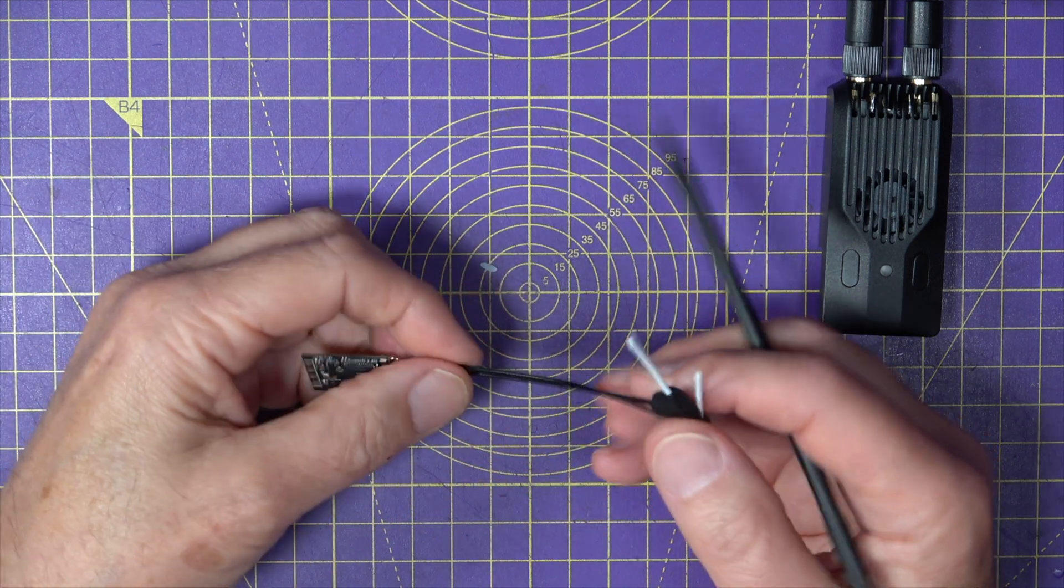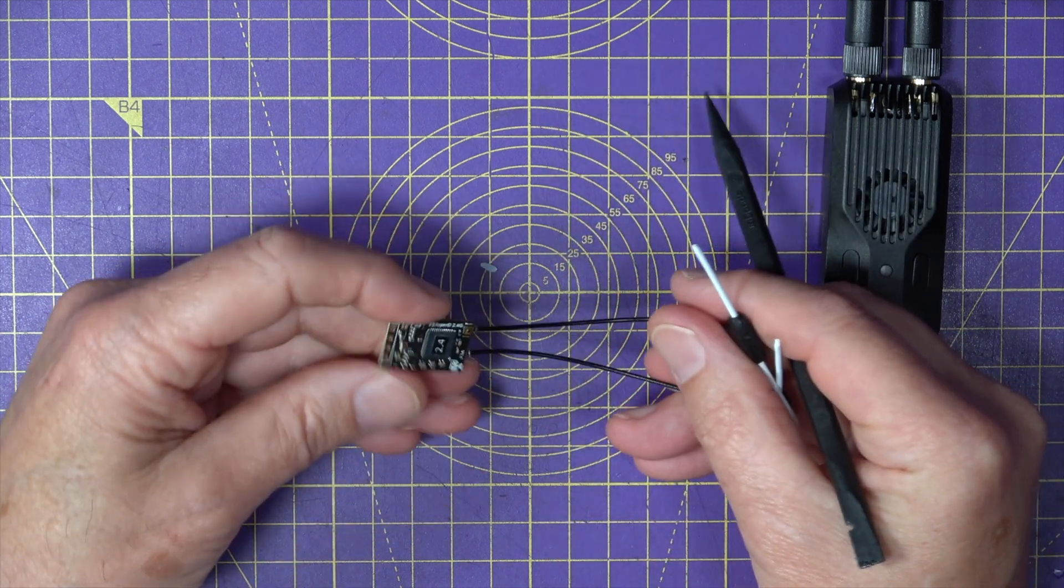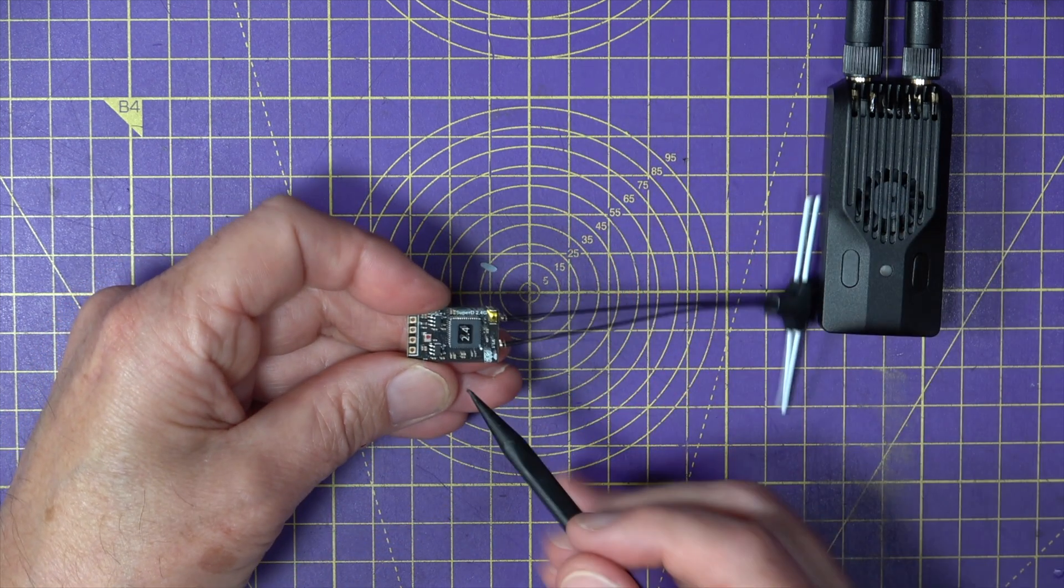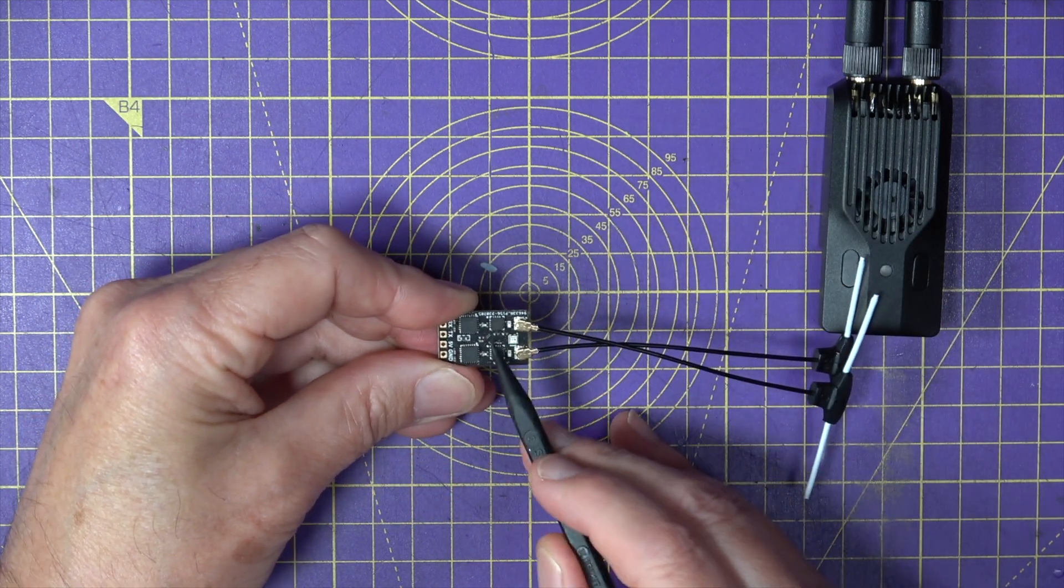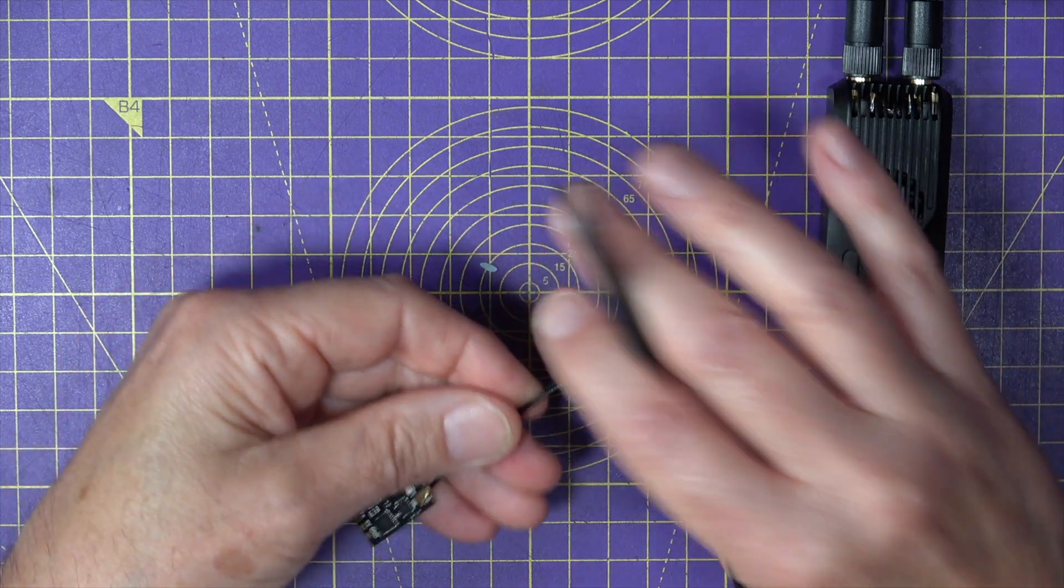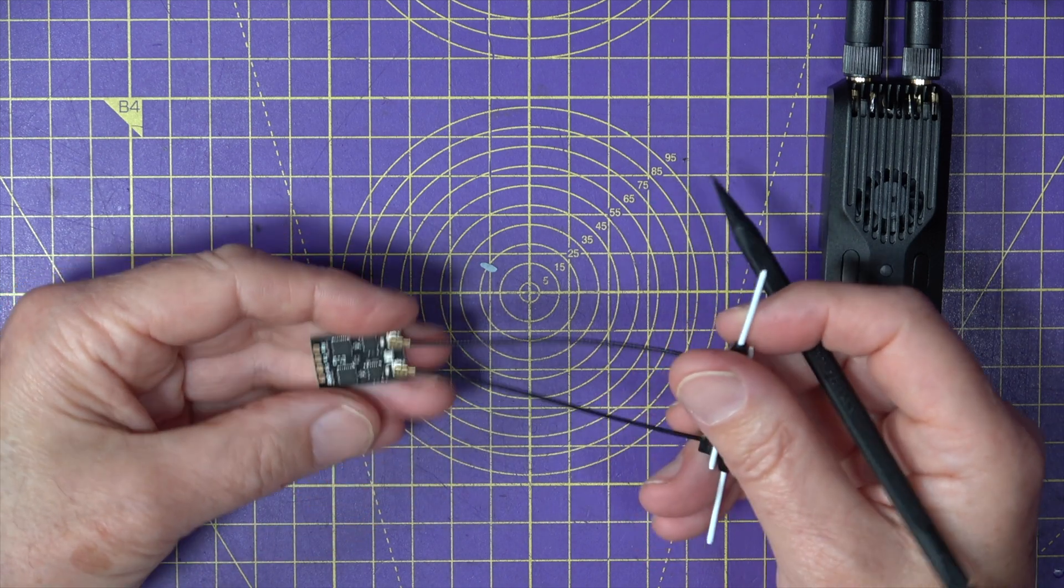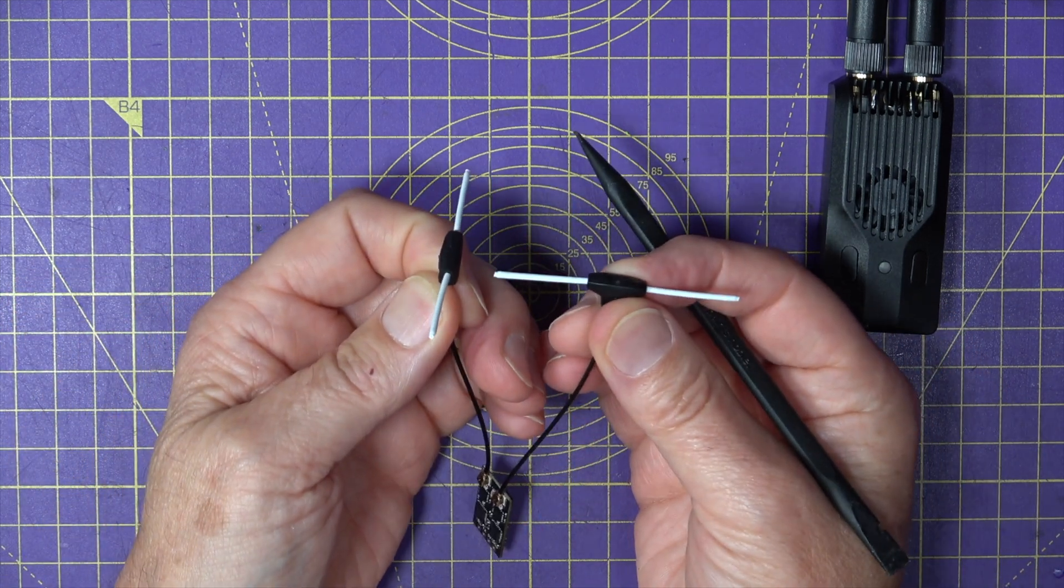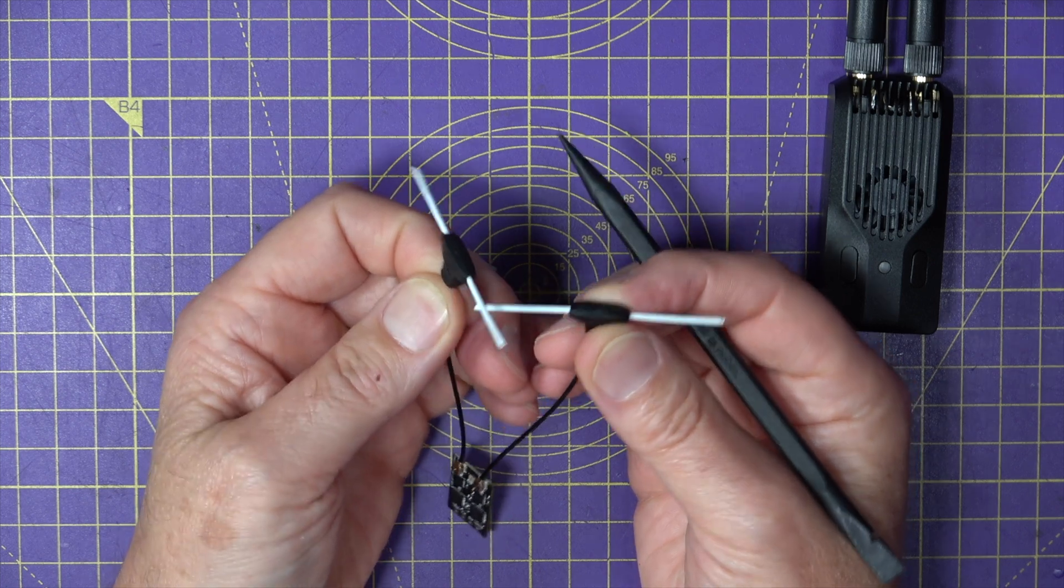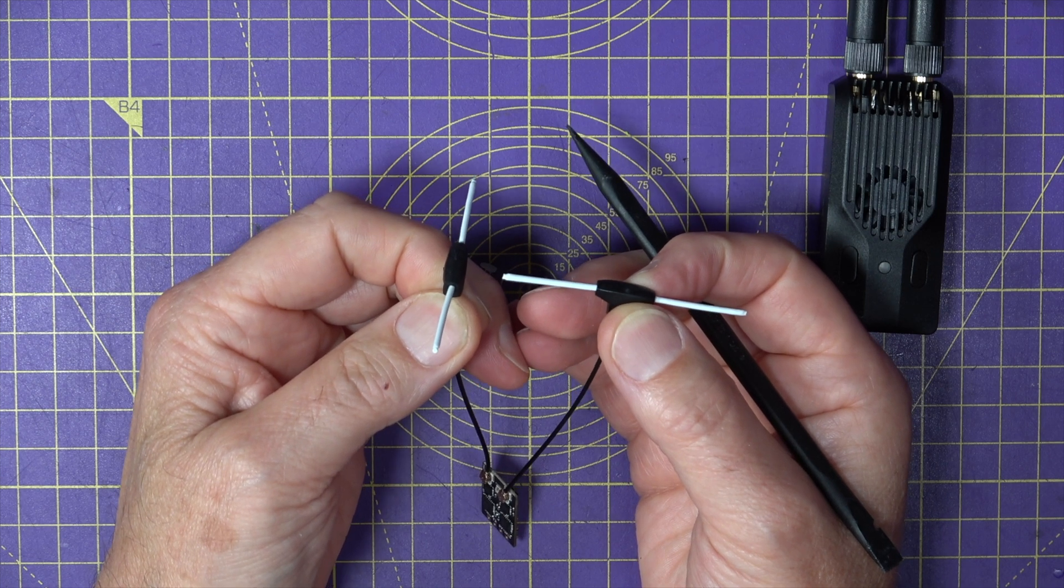A true diversity receiver like this BetaFPV SuperD one has got two separate receivers and RF amplifiers on here and two separate antennas. So there's a better chance of receiving the packets. Plus, you can mount your antennas like this to improve things even more. You're basically moving the null points around.